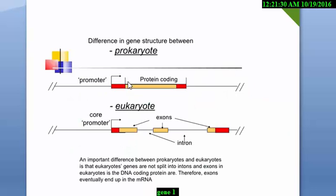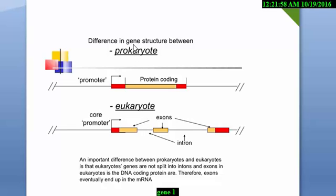Another main difference is that no introns are found in prokaryotes. In the picture we can see that in prokaryotes there are no introns — it is totally exons. But in eukaryotes there are exons and among them introns are found. So in prokaryotes only exons are found, no introns, so there is no need for splicing out introns. But in eukaryotes, to produce a protein we have to splice out the introns.